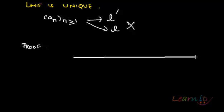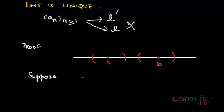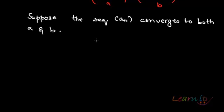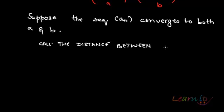For our assumption, let us take that it does converge to two limits. So what we can assume is that there is a limit a and there is a limit b. Suppose the sequence a_n converges to both a and b. Let us call the distance between a and b as d, so |a minus b| equals d, and the distance is greater than 0.